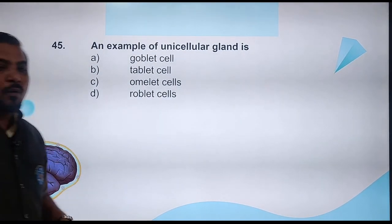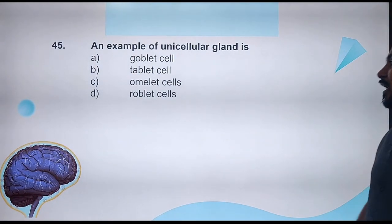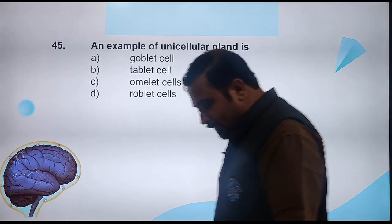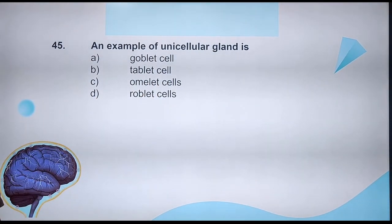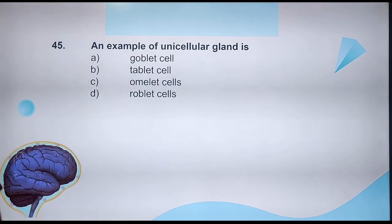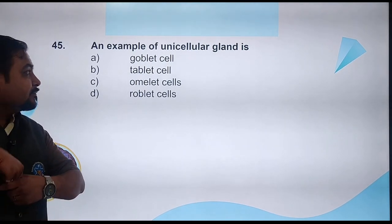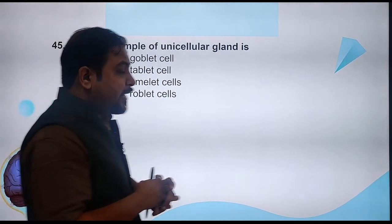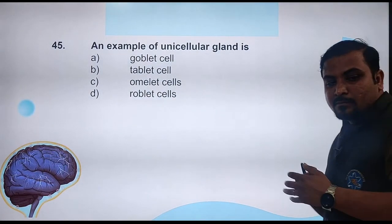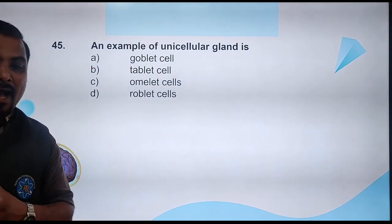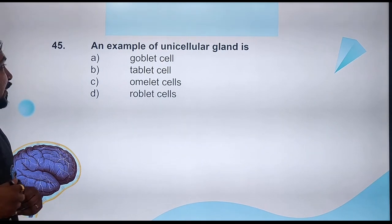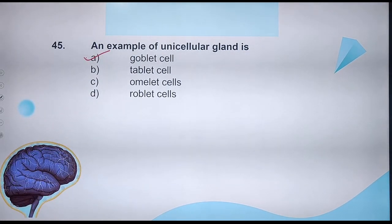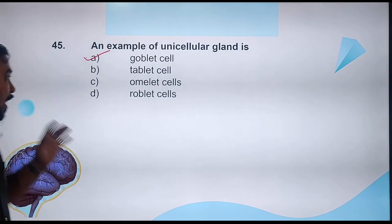Question 45: An example of unicellular gland — options are goblet cell, tablet cell, omlet cell, roblet cell. Very interesting options! The example of a unicellular gland is a goblet cell. That is what it is known as — goblet cell. It produces mucus, a type of sticky material that acts as a lubricant.